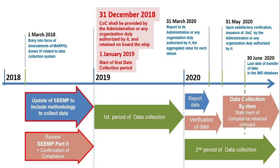The SEEMP must describe which fuel monitoring method you will follow — whether the fuel tank monitoring method, the bunker BDN method, or the flow meter method. After that, it needs to be reviewed by the administration and you have to receive a COC (Confirmation of Compliance). Once approved, you monitor data for one calendar year — 1st January 2019 to 31st December 2019. Then you submit this calendar data before 31st March 2020 to the administration. The administration verifies the data and issues a SOC (Statement of Compliance) before 31st May, then sends data to IMO before 30th June.